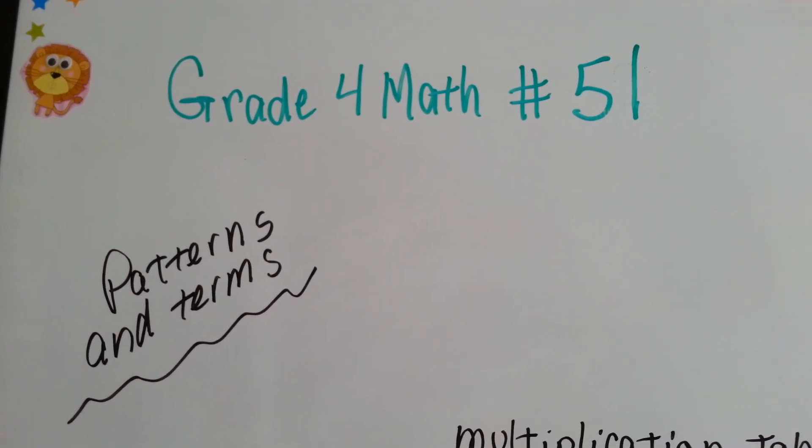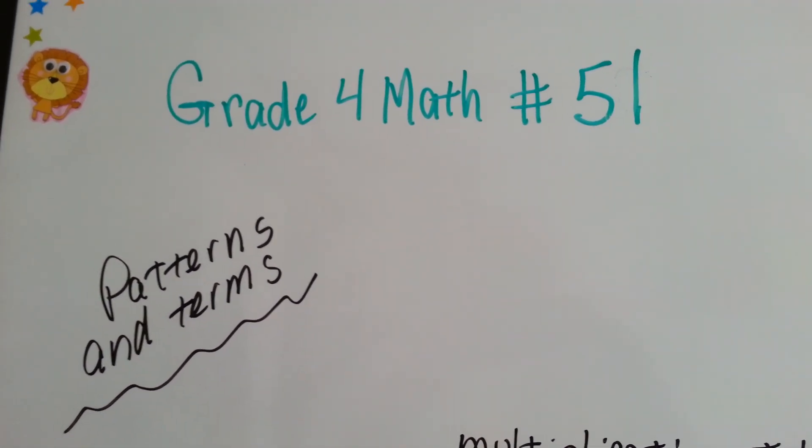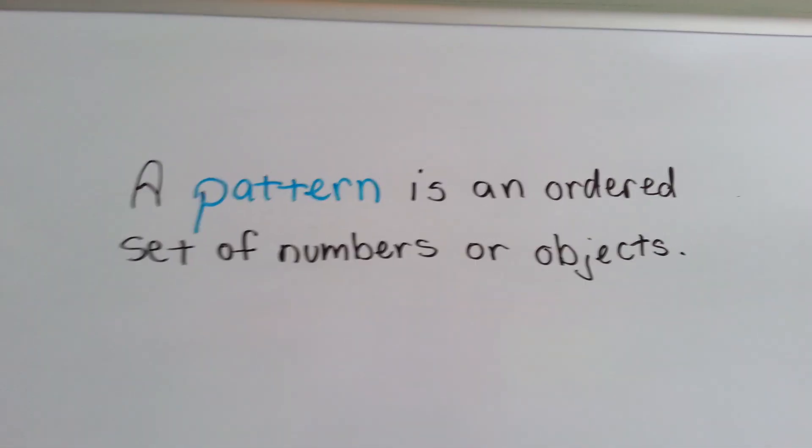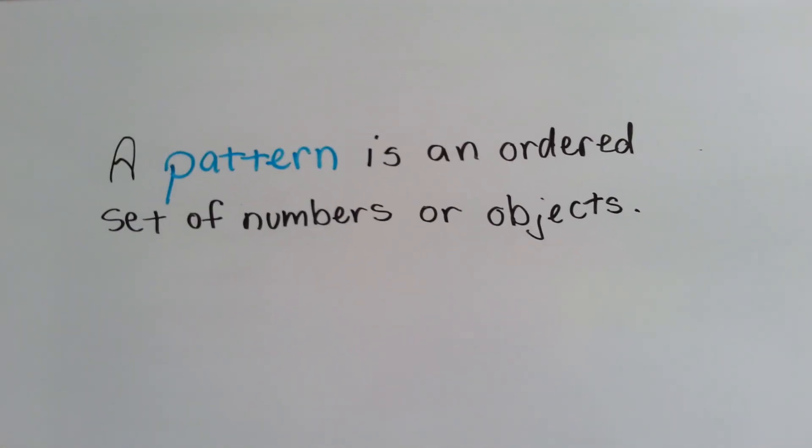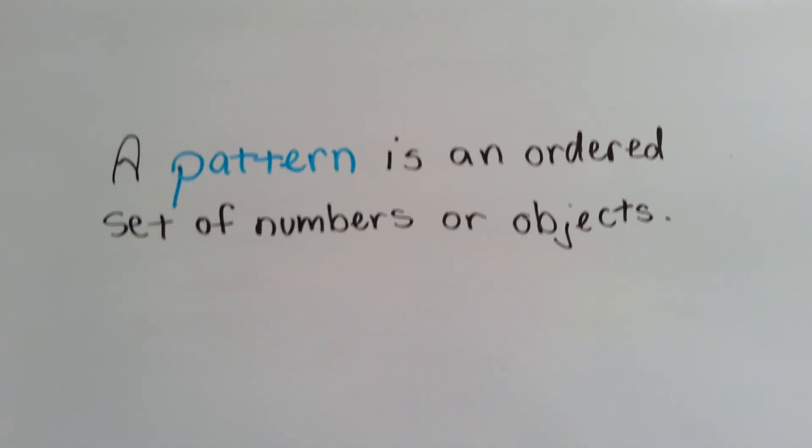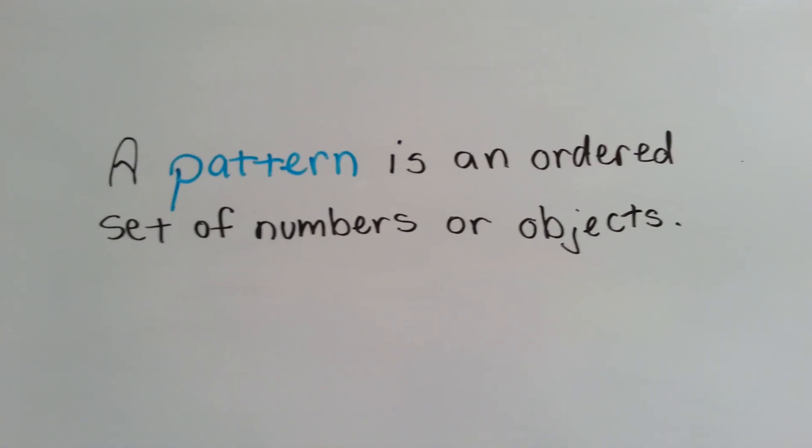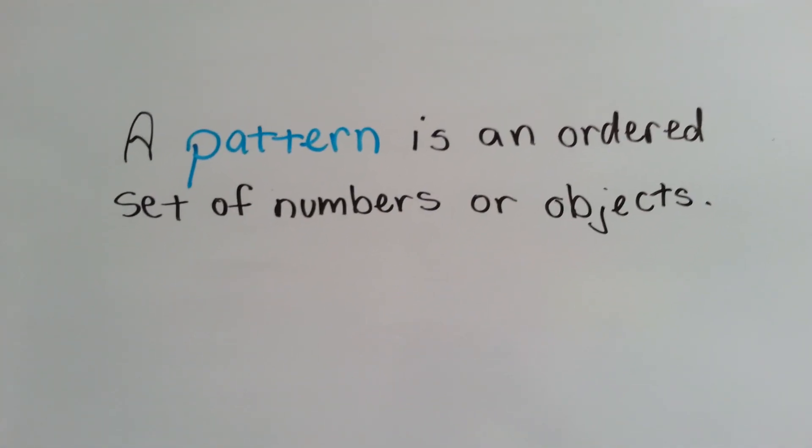Grade 4 math number 51, Patterns and Terms. What are patterns and terms? Well, a pattern is an ordered set of objects or numbers. Think of the pattern on some curtains or the pattern of a blouse.